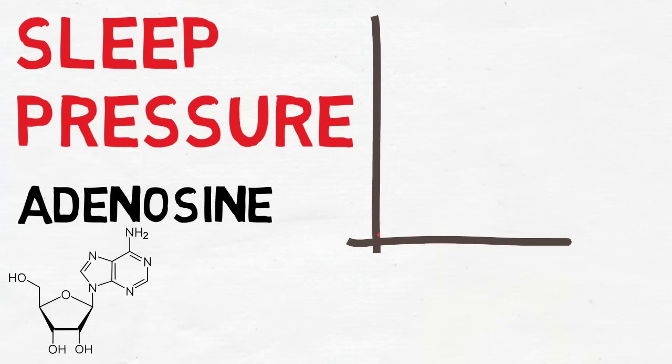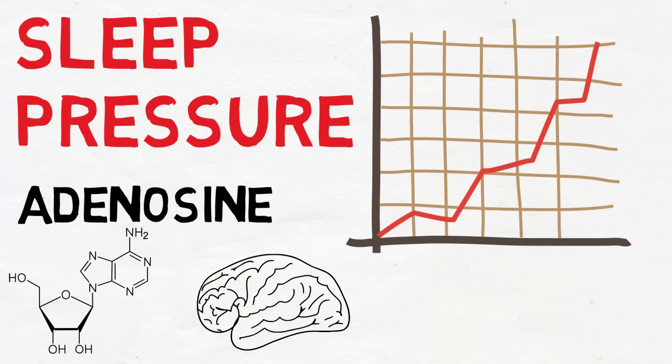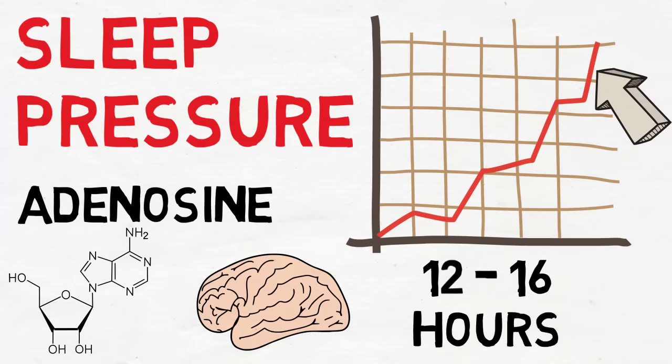The longer you're awake, the more adenosine will accumulate and along with it so will your desire to sleep. High concentrations of adenosine turn down the volume of wake promoting regions in the brain, while simultaneously turning up the dial on sleep inducing regions. As a result of that, when adenosine concentrations peak, an irresistible urge for sleep will take hold. That's assuming you have a stable circadian rhythm and you're not experiencing jet lag. The peak, for most people, comes after being awake for 12 to 16 hours.